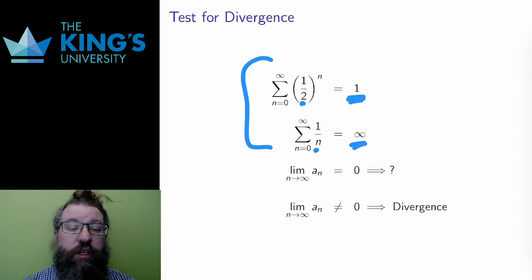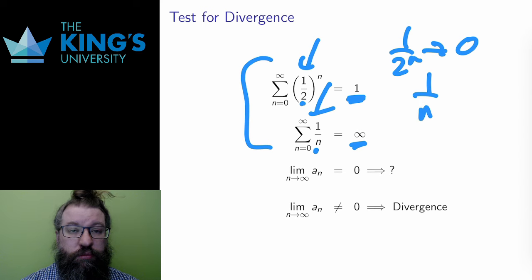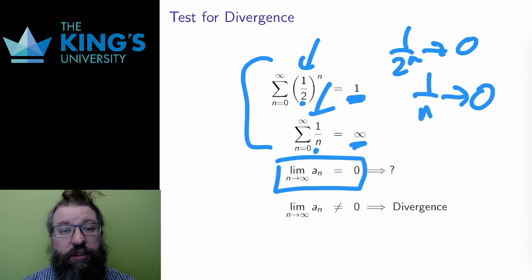As I mentioned in the video about that series, this shows something really important. Both of these series have terms that get small. 1 over 2 to the n and 1 over n are both smaller and smaller numbers as n gets larger. I can say here that the limit of the terms, not of the series itself, but the limit of the terms of the series is zero.